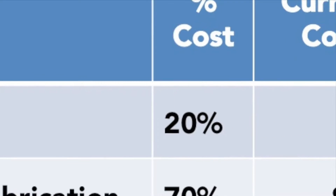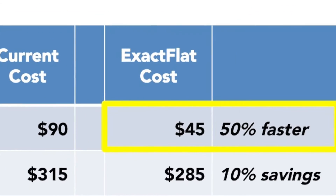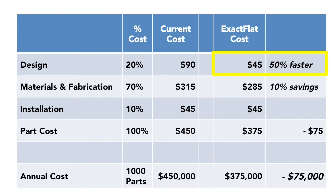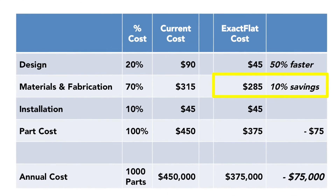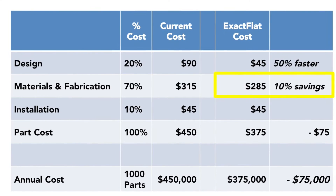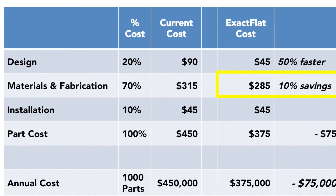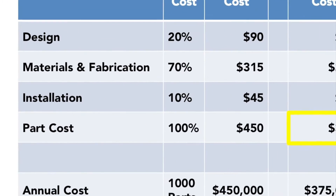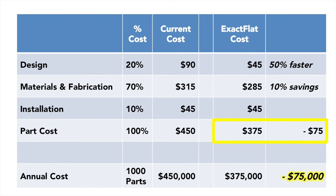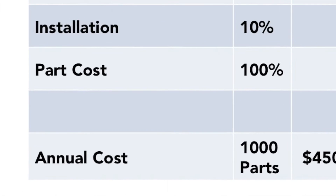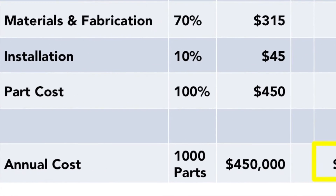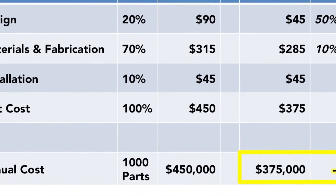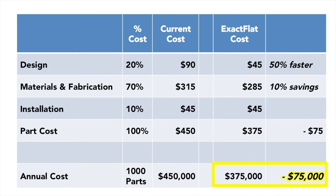With ExactFlat software, design is 50% faster, costing only $45. Materials and fabrication are about 10% cheaper, at $285 versus $315. Total part cost is $75 lower, and total cost is reduced by $75,450 to $375,000 in the first year alone.